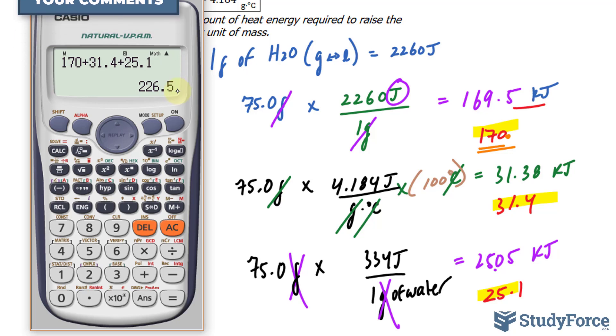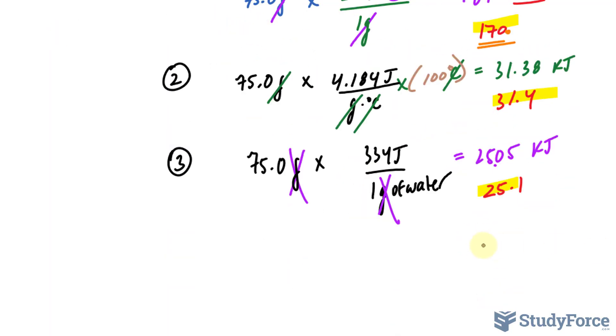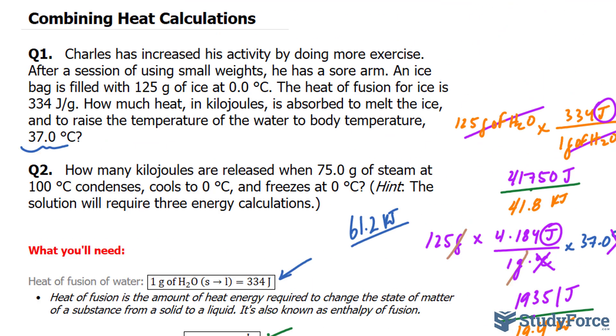This 5 is followed by nothing, and the first kept digit is a 6, which is even, so you don't push the 6 up to 7. That's one of the rules that we know. We have 226 kilojoules of energy. And there you have it. That is how to combine heat calculations.